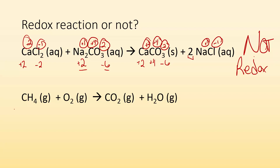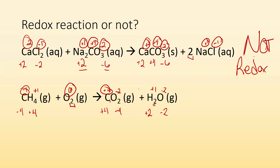Let's look at this second reaction. In CH₄, hydrogen bonded to a nonmetal is plus one; there are four of them, so plus four — meaning carbon must be minus four. Oxygen by itself is zero. In CO₂, oxygen in a compound is minus two; two oxygens give minus four, so carbon must be plus four. In H₂O, oxygen is minus two; two hydrogens each must be plus one. Carbon changed from minus four to plus four, and oxygen changed from zero to minus two — this IS a redox reaction because oxidation numbers changed.